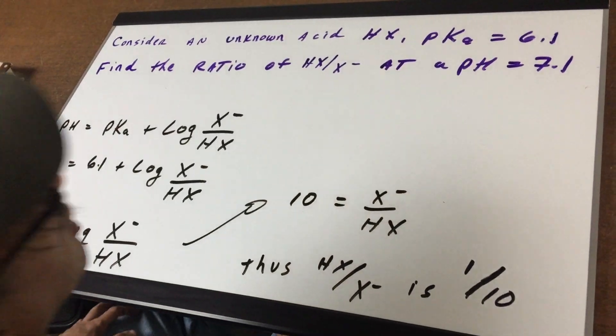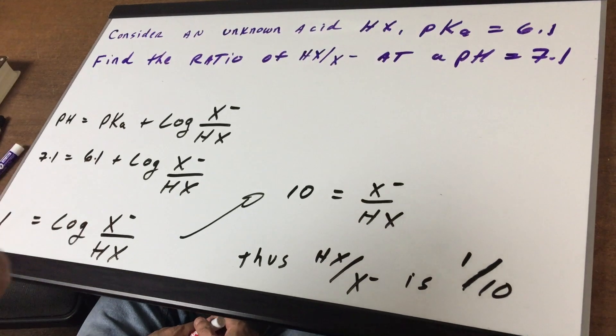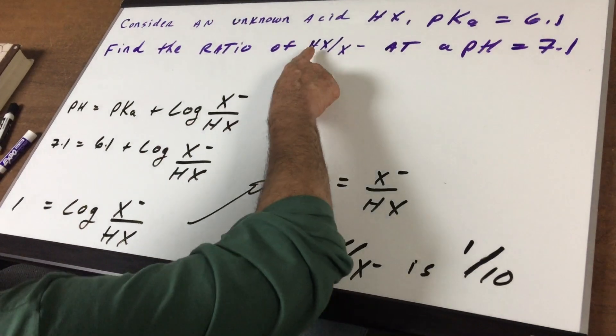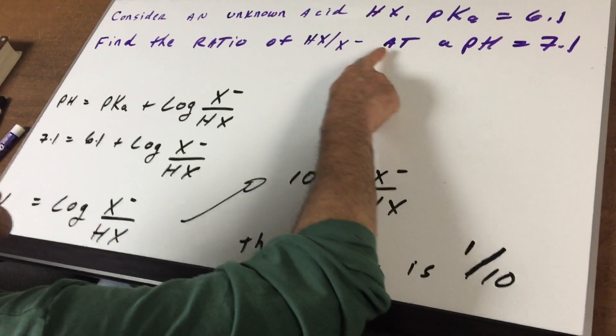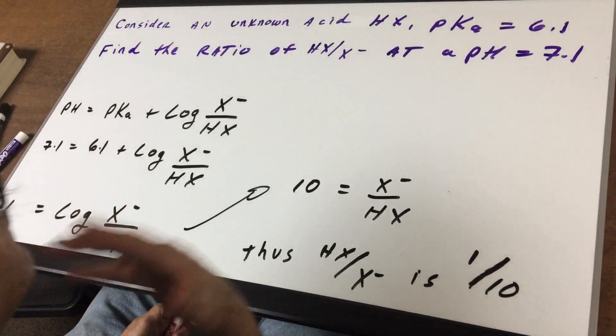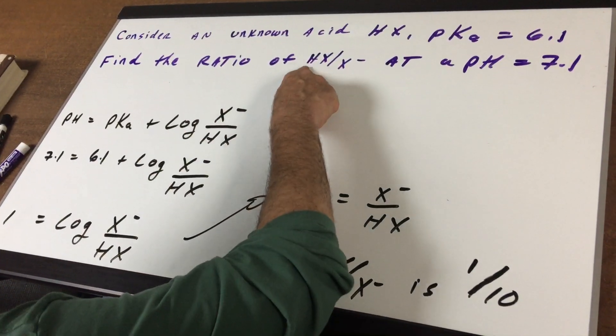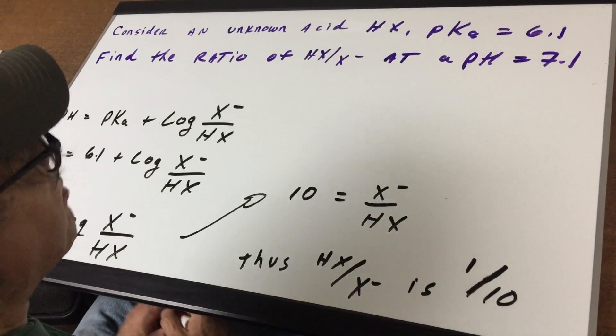We have an unknown acid, we're going to call it HX, and the pKa is given as 6.1, and I ask you to find the ratio of the acid to its salt or its conjugate at a pH of 7.1. The minute you hear a problem that says ratio and you see you got the acid and its salt, I want you to think one word, and that's a buffer.